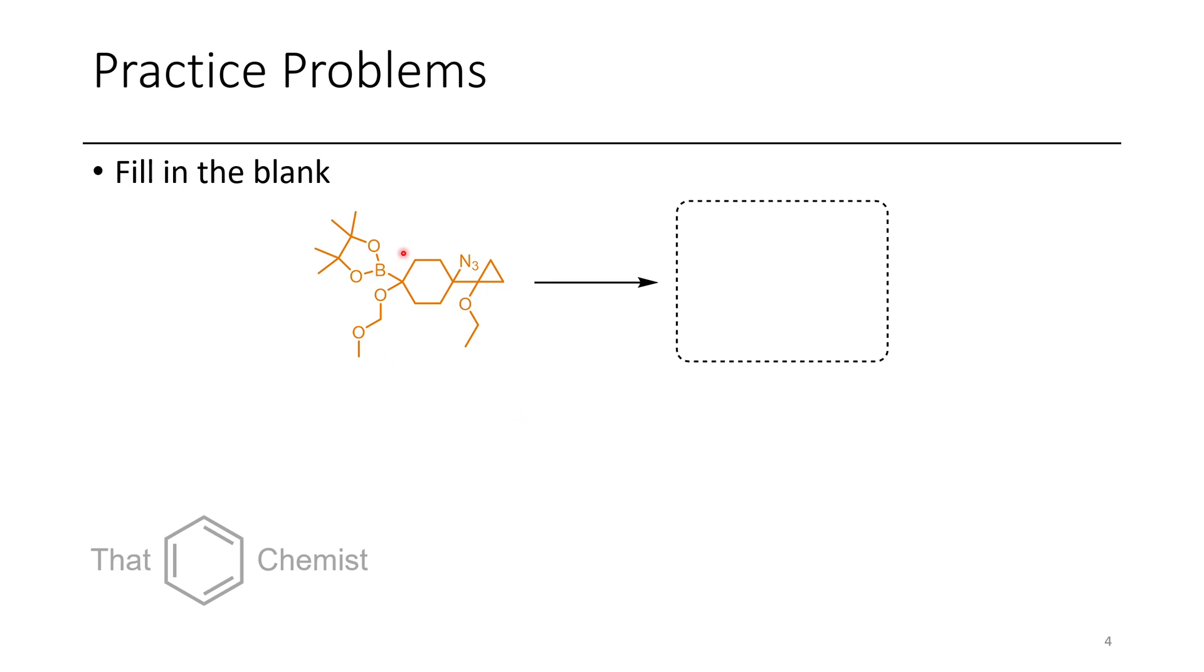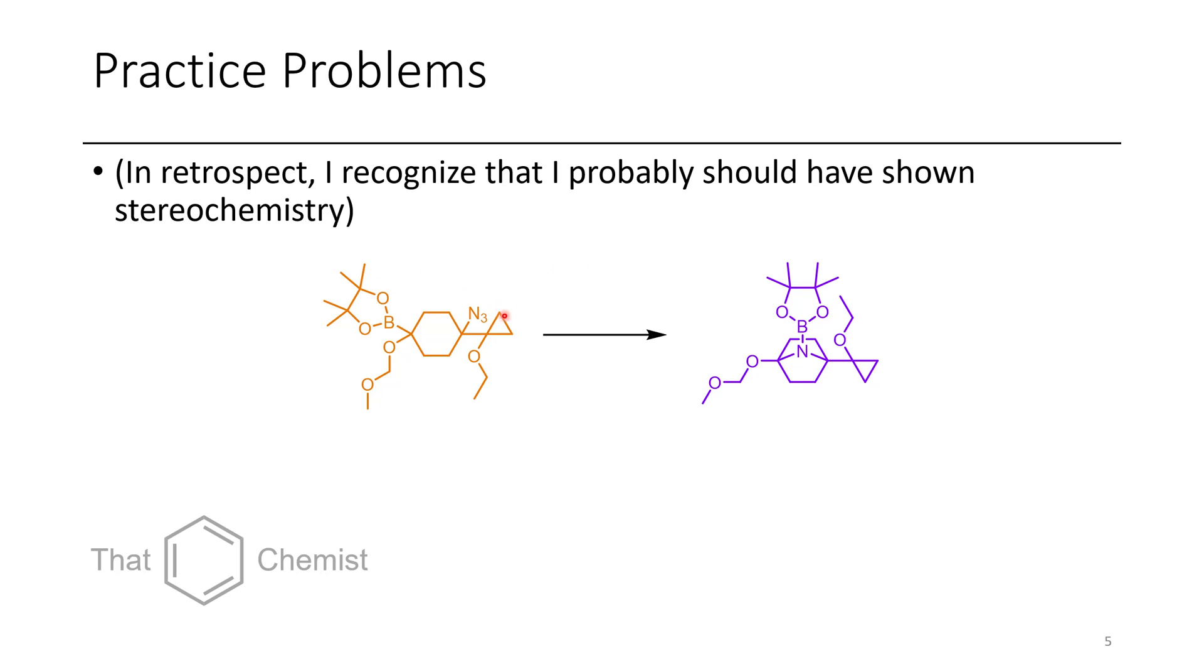Now in the next problem we have this boron-containing compound and we also have an azide, and if you recall from last lecture this looks a lot like that Evans reaction where we form pyrrolidines. Now I recognize in retrospect that it would have been easier if I showed that the boron and the nitrogen were on the same face of the ring. Hopefully that wasn't too confusing for you.